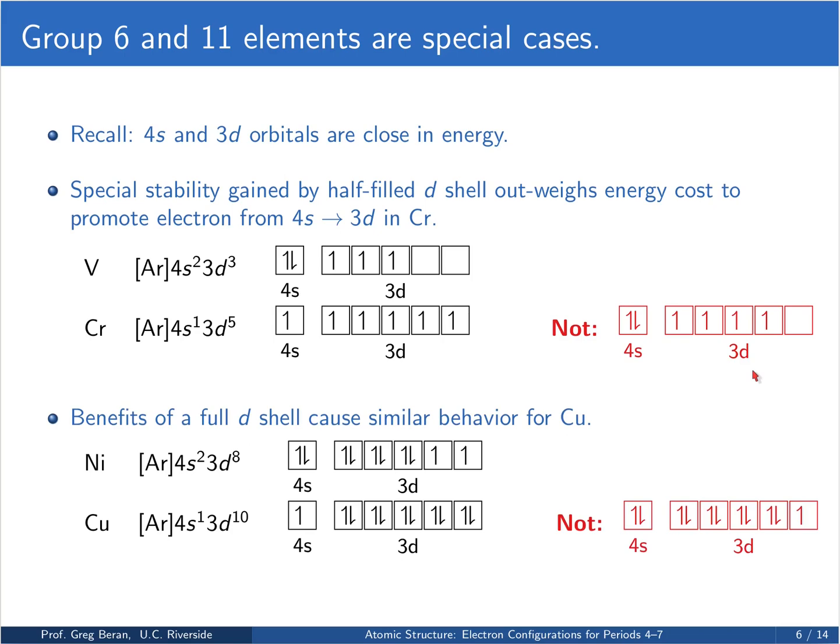There are similar benefits to be gained for a completely full 3d shell. So for copper in group 11, instead of having a 4s2 3d9, which you might expect since it's adjacent to nickel, which has a 4s2 3d8, you end up with a 4s1 3d10 configuration.